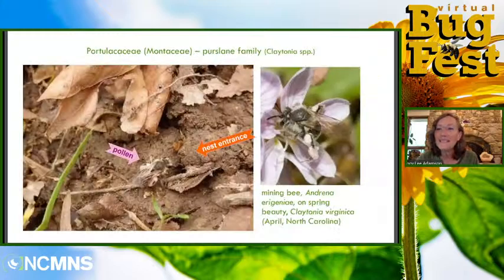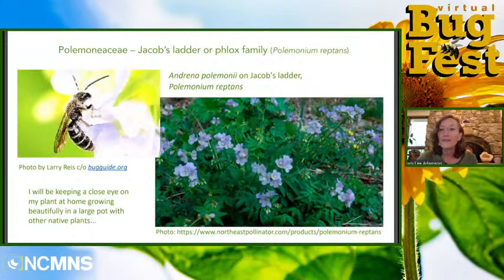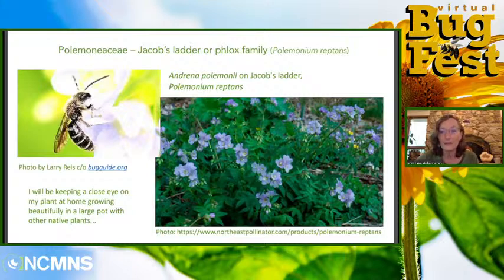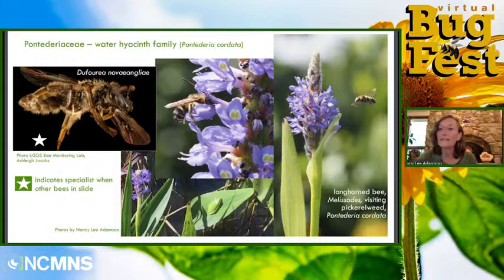The spring beauty bee is a really easy specialist to spot because her legs are covered in pink pollen and hardly anything else is in flower. Jacob's Ladder is another wonderful native perennial that grows well in a container — it's a gorgeous native that you can actually find in a regular nursery. Pickerel weed is worth taking a close look at even if you don't find the specialist bee, and keep a lookout for frogs while you're at it.